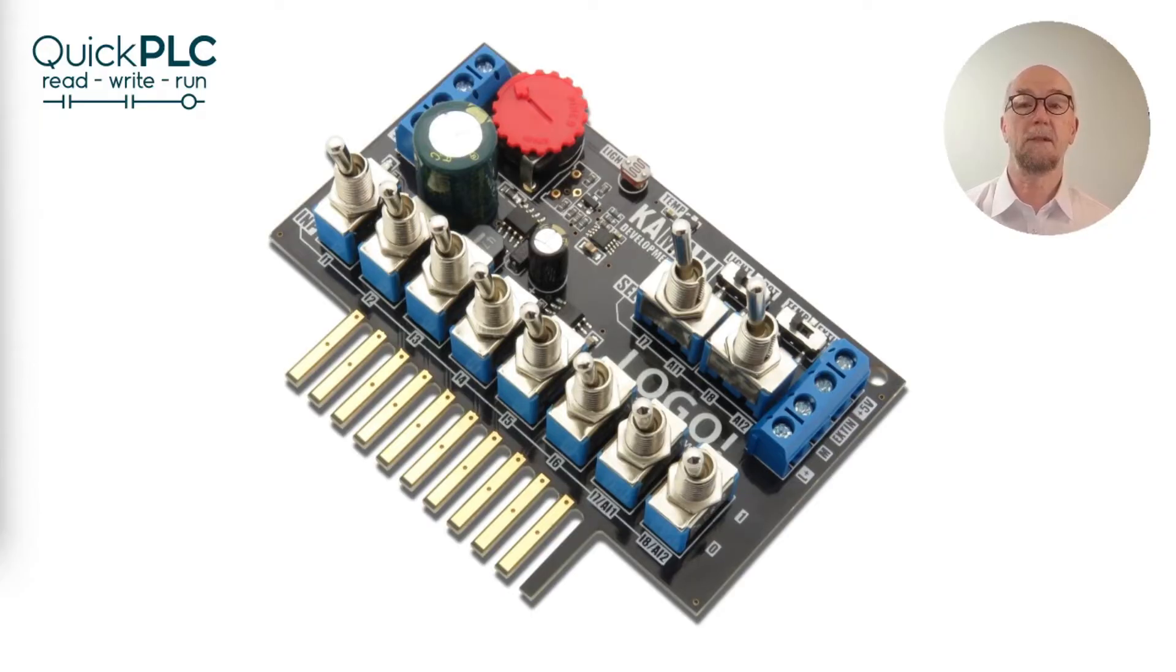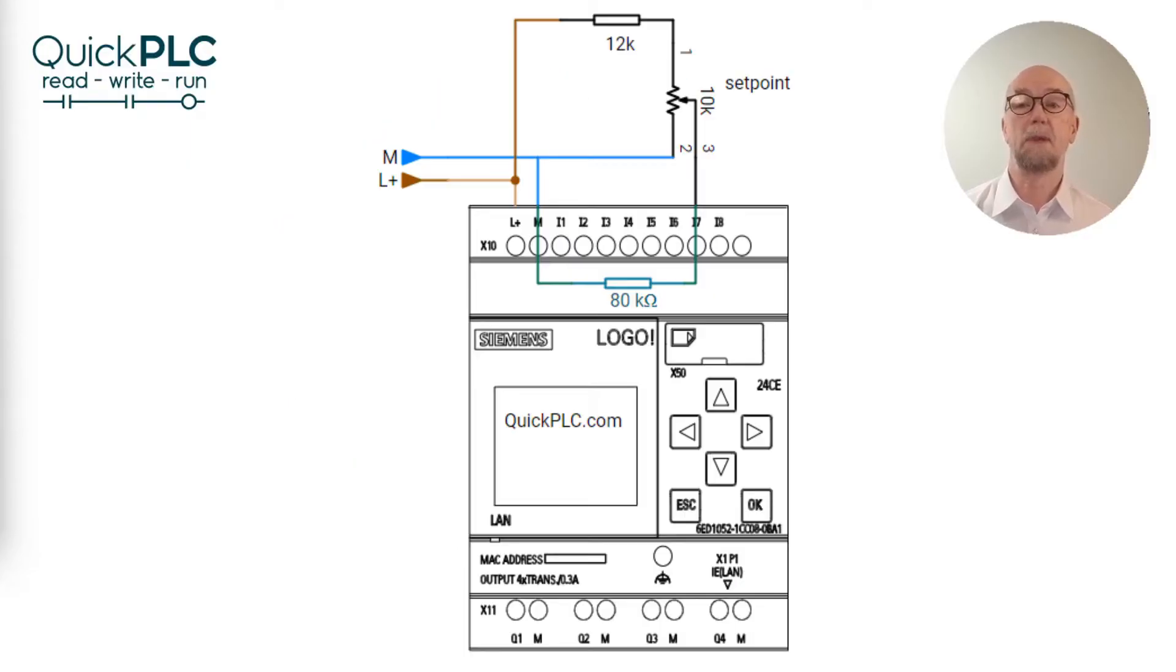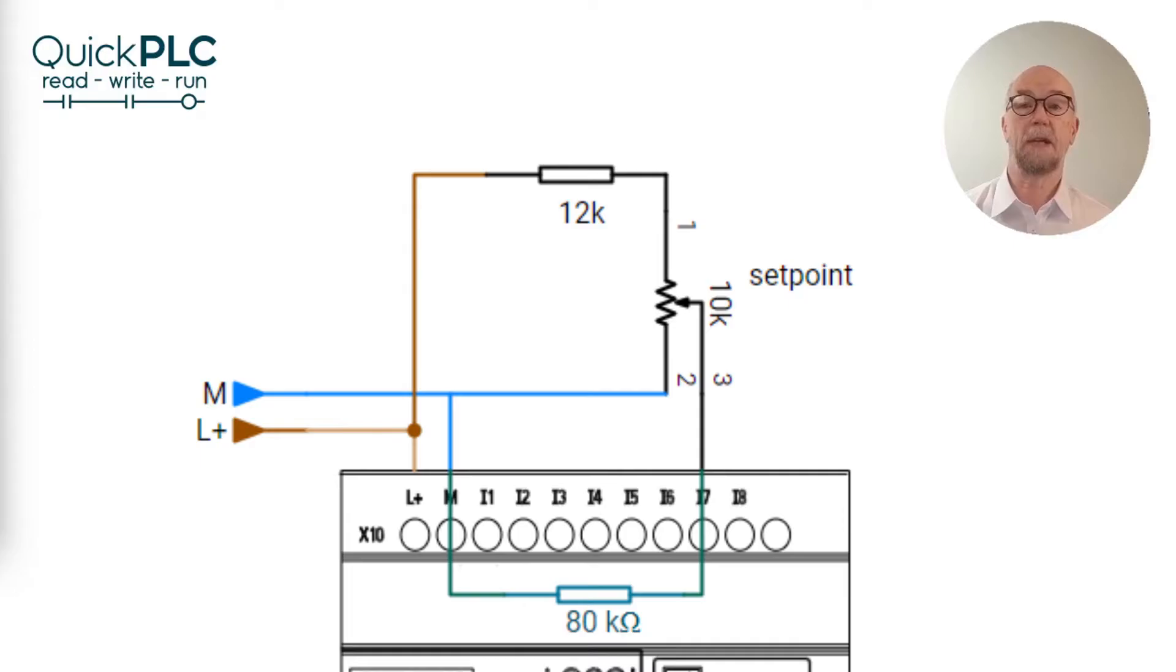A potentiometer can be used to drive the analog input. On the simulator, 10 volt supply is generated for the pot, but we can use the 24 volt supply if we add in a voltage dropping resistor in series. In this sample circuit, we're using a 10k potentiometer and we need 10 volts at the top terminal to get 1000 counts internally.